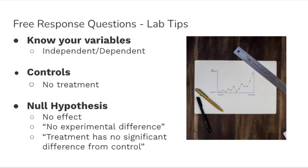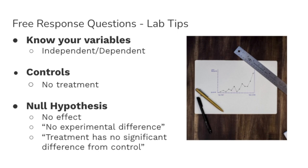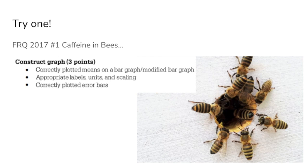If it asks you to state a null hypothesis, you should be making a statement how the independent variables will have no effect on the outcome. You could say something like there will be no experimental difference or the treatment has no significant difference from the control. If your null hypothesis is related to genetics, then you need to say something like the data are consistent with the predicted method of inheritance.